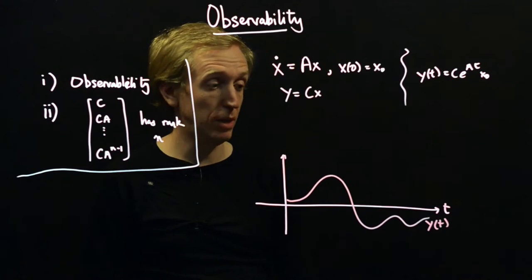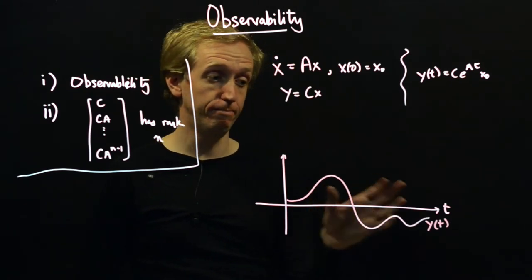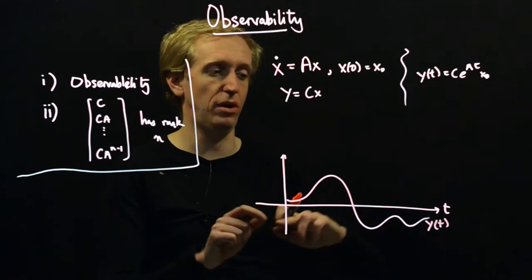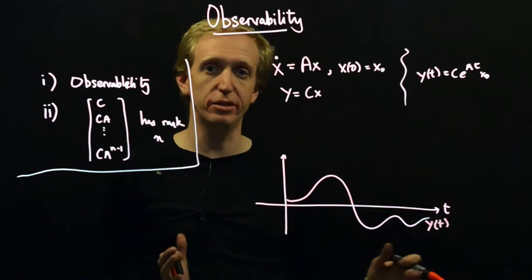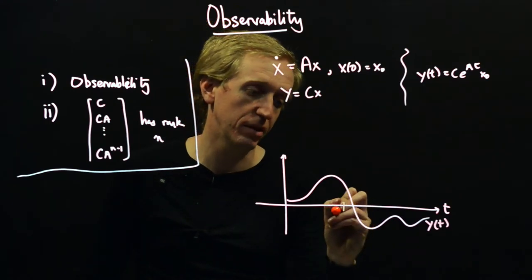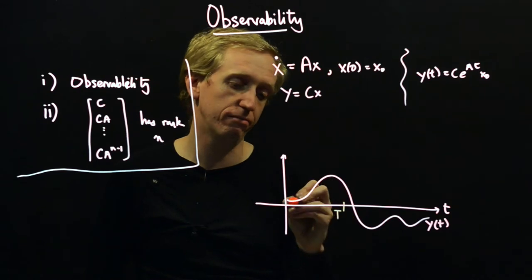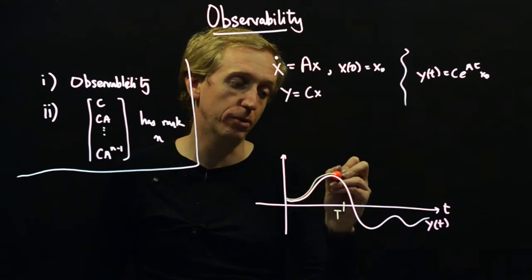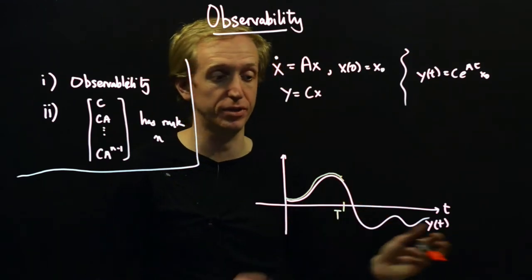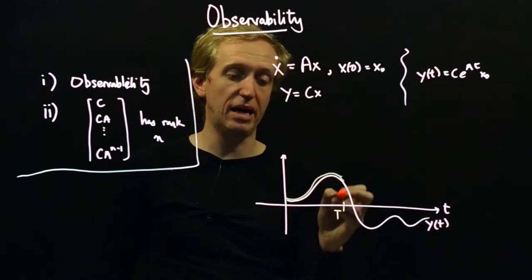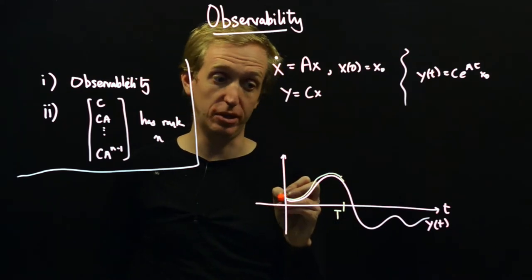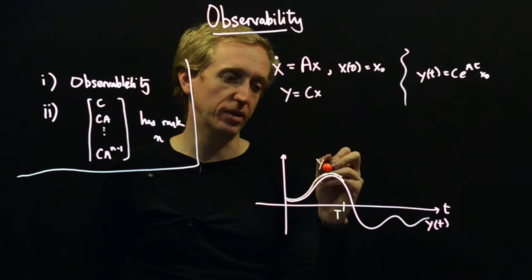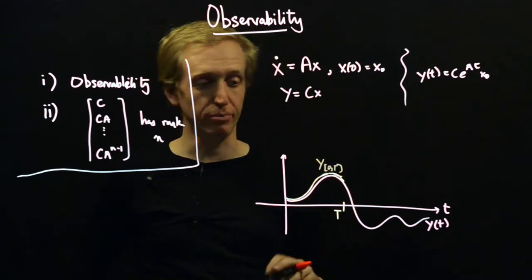And observability is about deducing the initial condition based on this output y of t. And in particular it's about deducing that initial condition based on not the whole trajectory for all time but maybe only the trajectory up to some point in time. So maybe we have some value capital T and we've got measurements on our output up to that time capital T and we don't have anything else. So we've taken measurements up to here and now we would like to deduce the value of the initial condition that got us there based only on this part of the signal. And maybe you would denote this like y 0t or something like that.